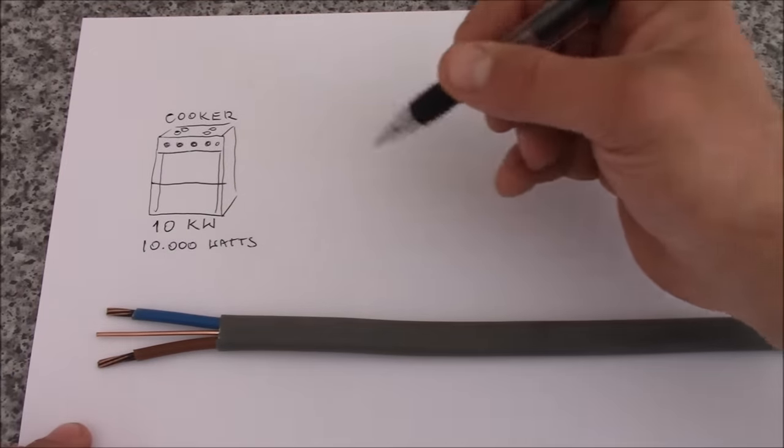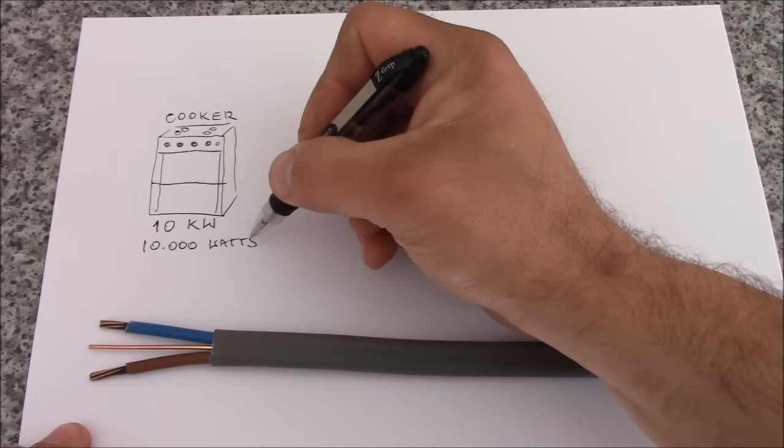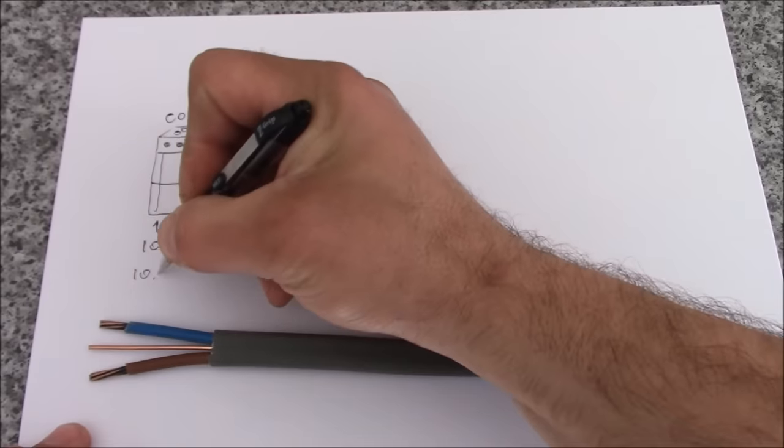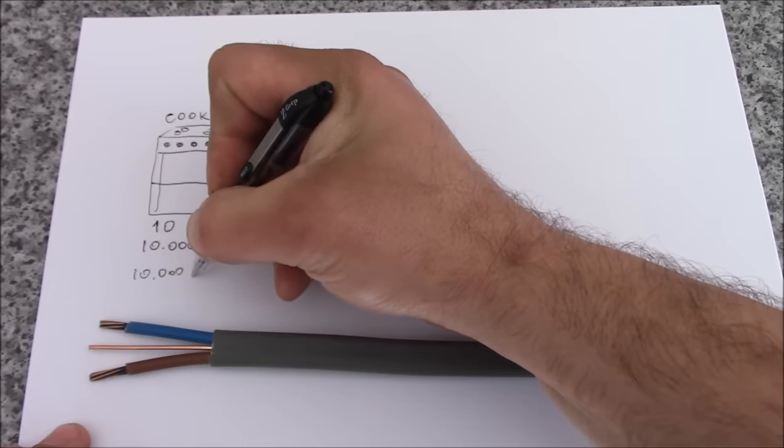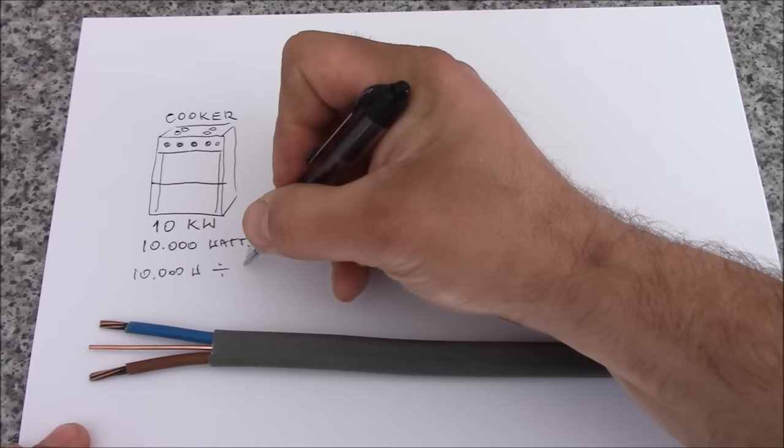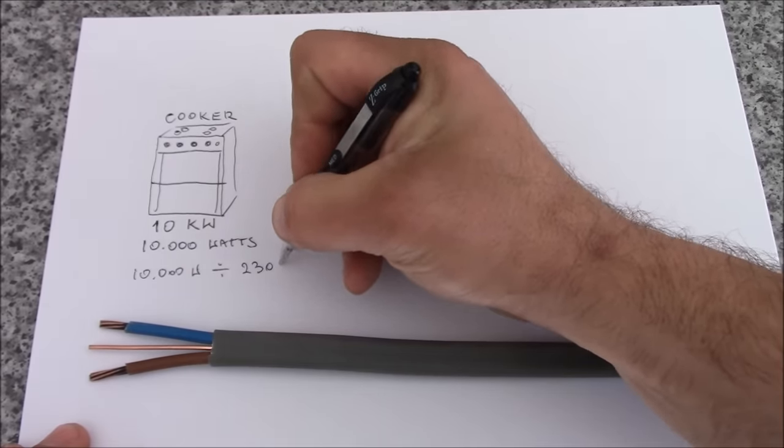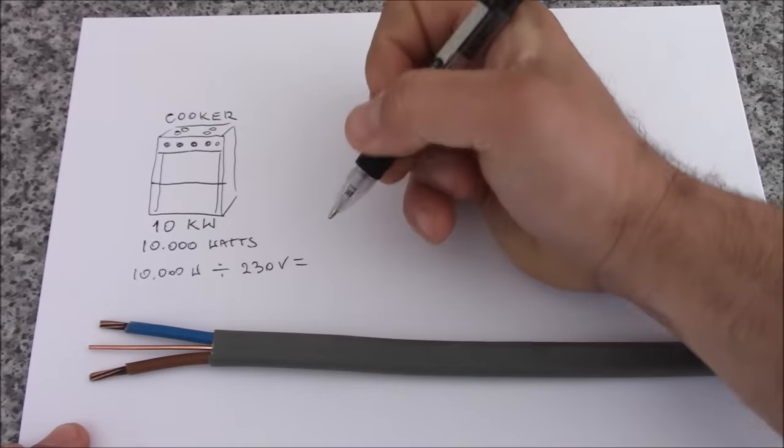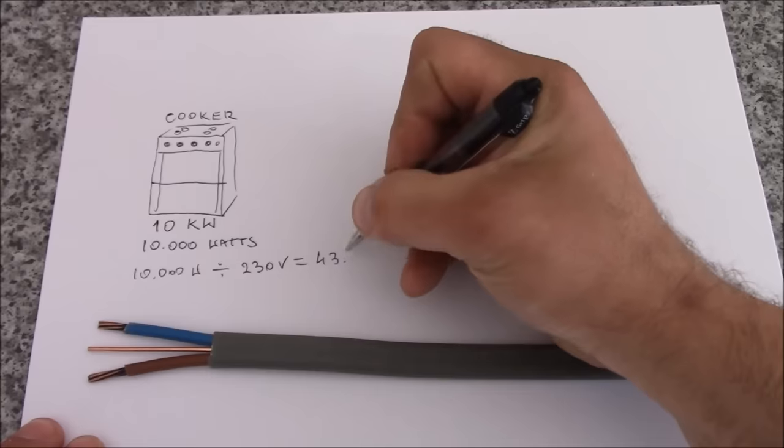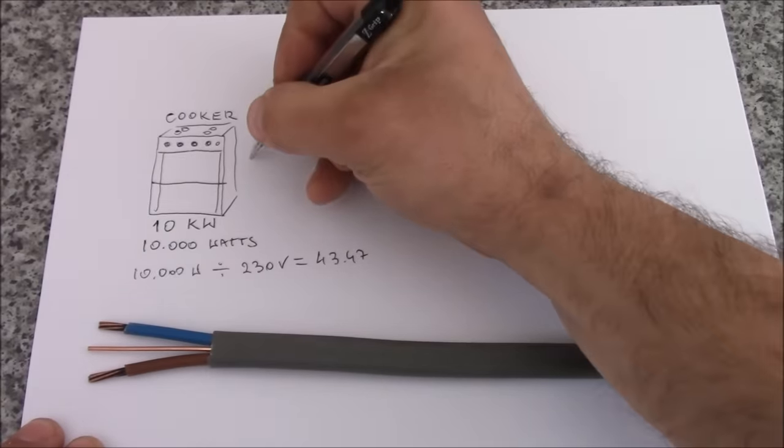Now to calculate the cable size we need amps not watts. So we need to convert the watts into amps. So basically 10,000 watts you have to divide by the voltage which is in UK 230 volts. And this gives us something about 43.47. So let's say 44 amps, that's our cooker.